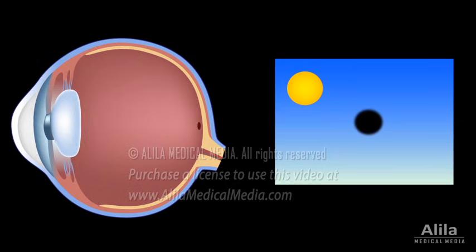However, instead of leaving a black hole in the vision, the brain fills it in with visual information from around the object.